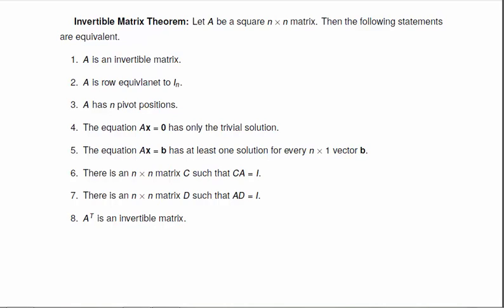The equation Ax equal to zero has only the trivial solution. If this is row equivalent to the identity matrix, then there's no free variables. So there has to be only one solution, the trivial solution.